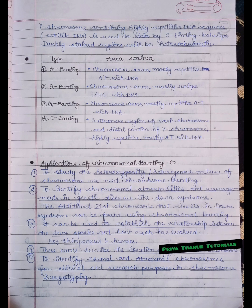Here is the table that represents the type and the area stained by this technique. The first type is G banding and the area stained is chromosome arms, mostly repetitive AT rich DNA. Second type is R banding. The area stained is chromosome arm, mostly unique GC rich DNA.